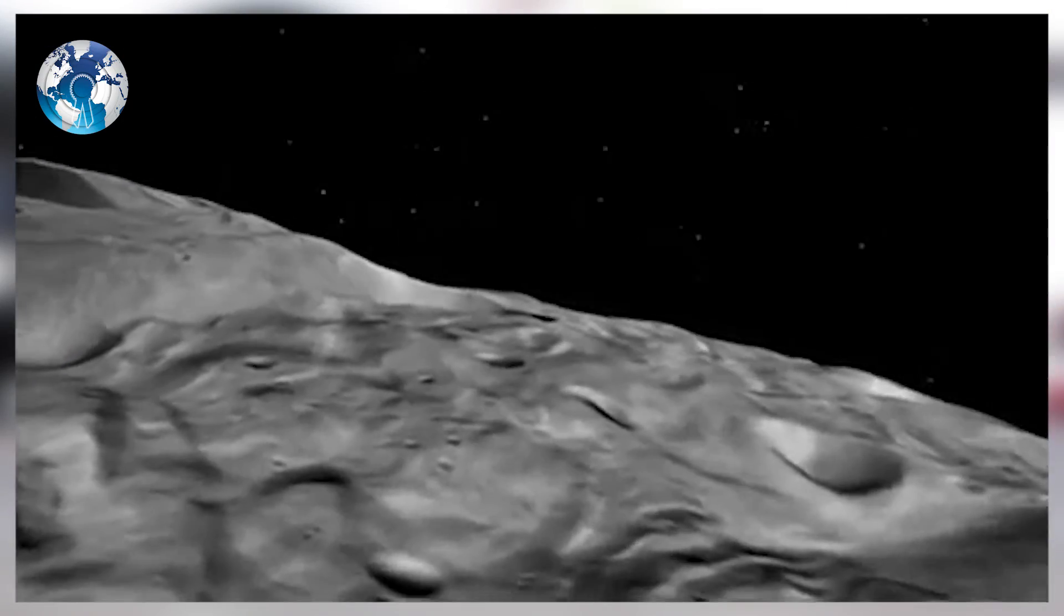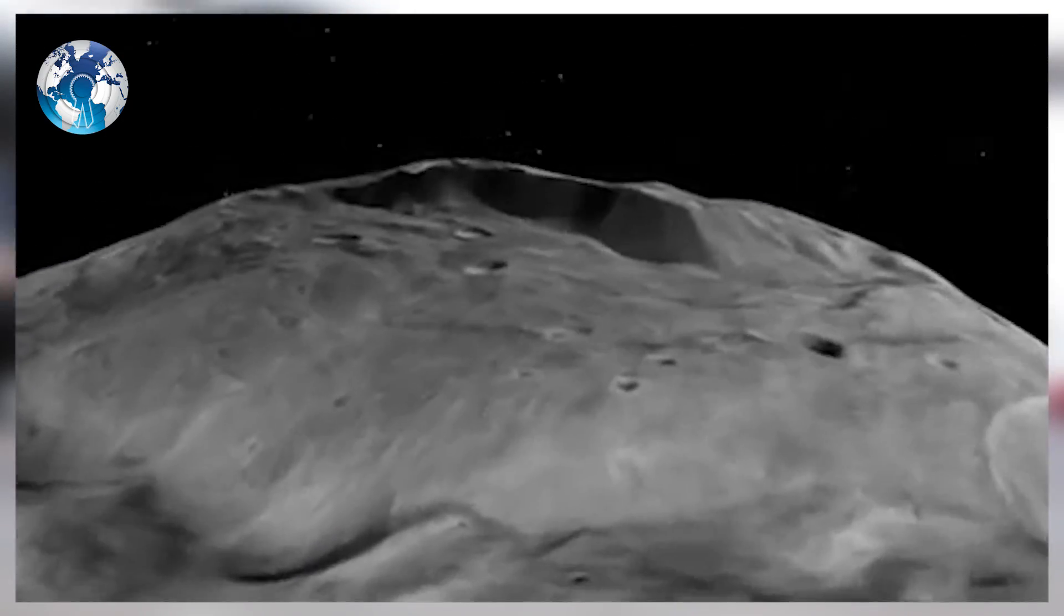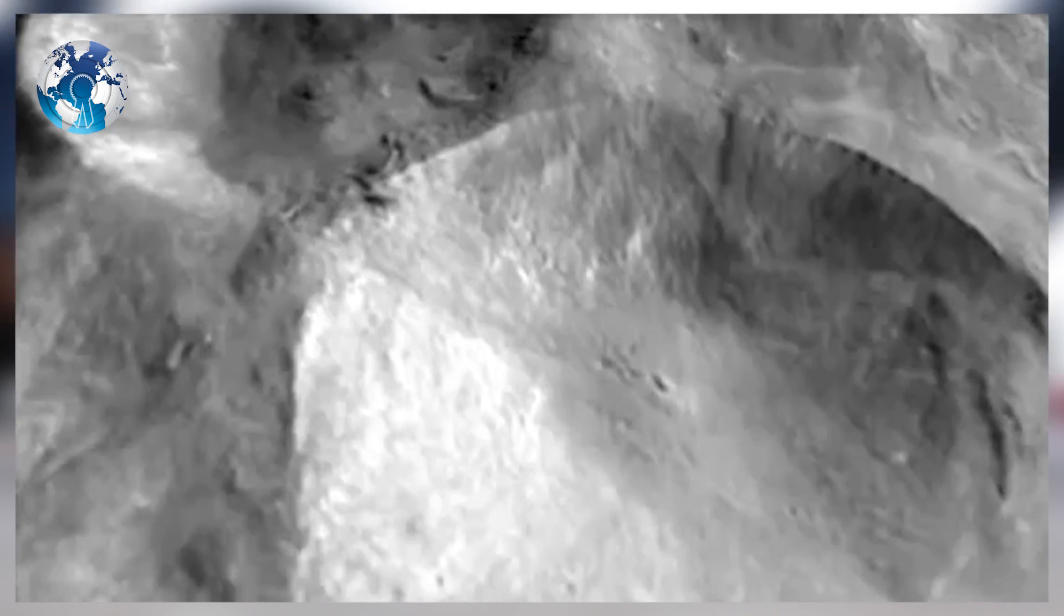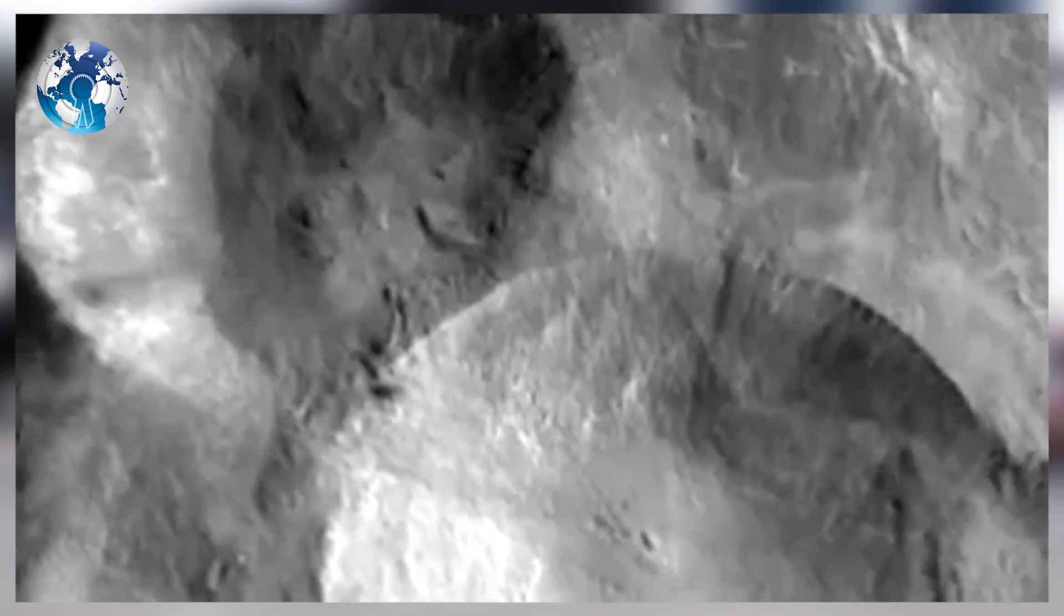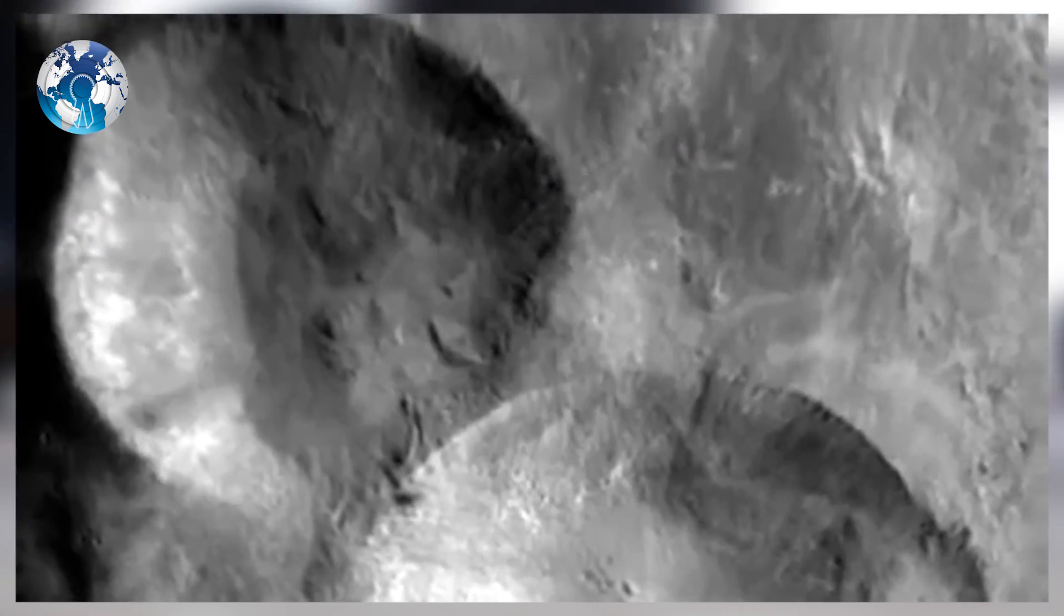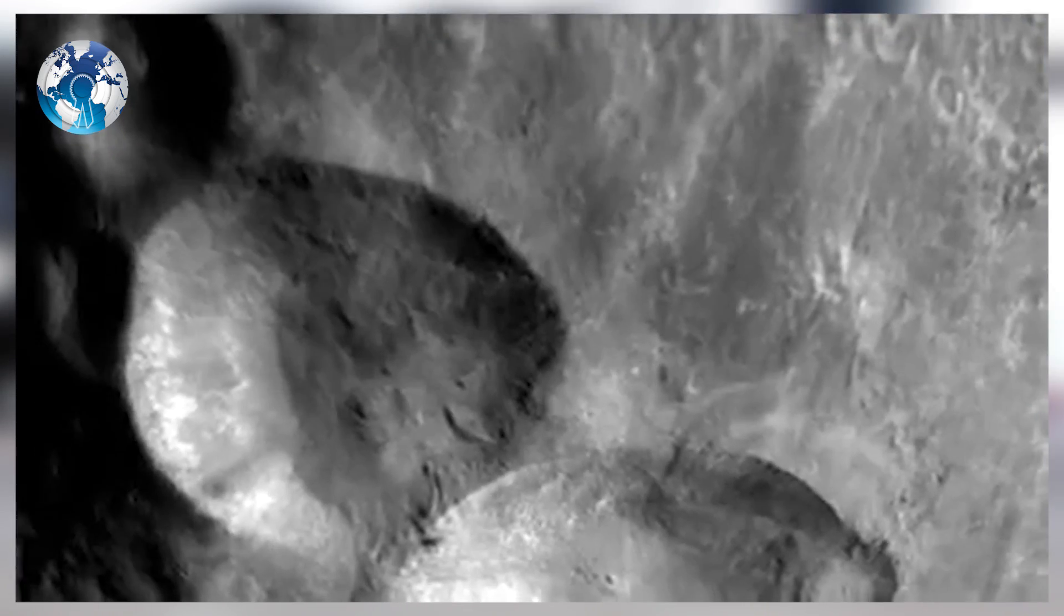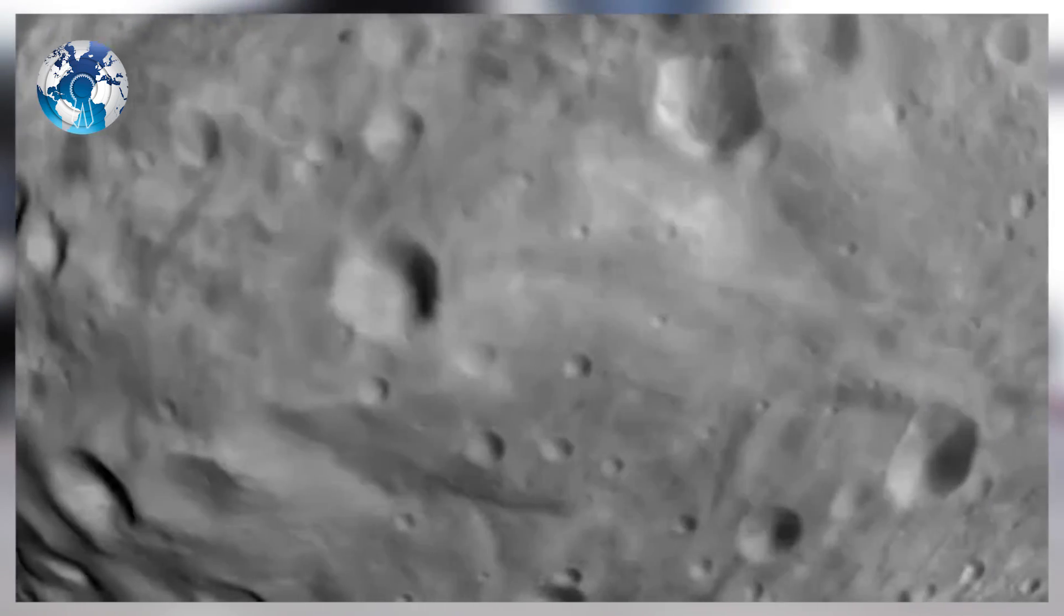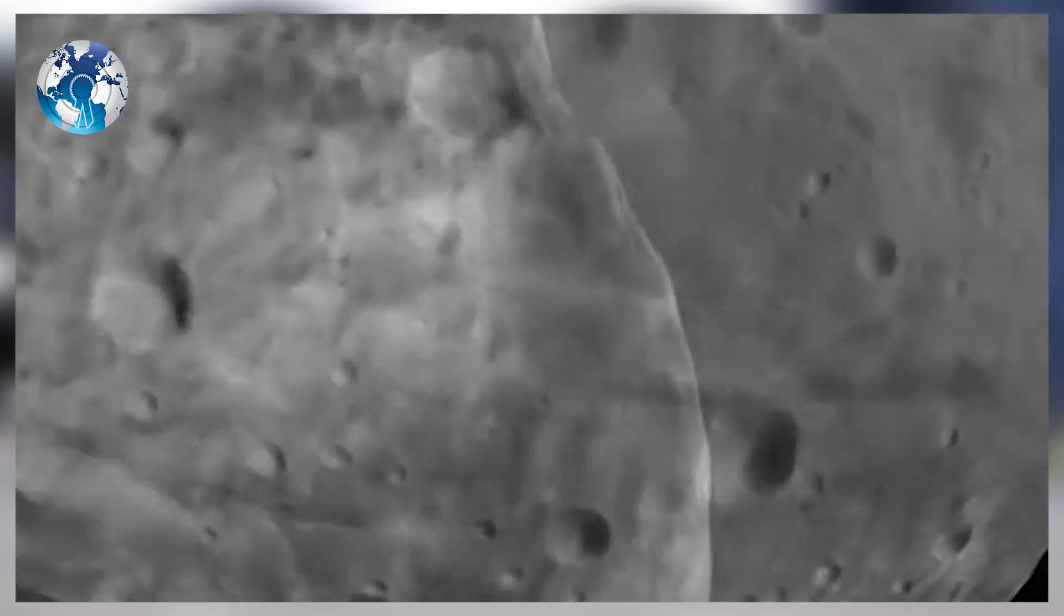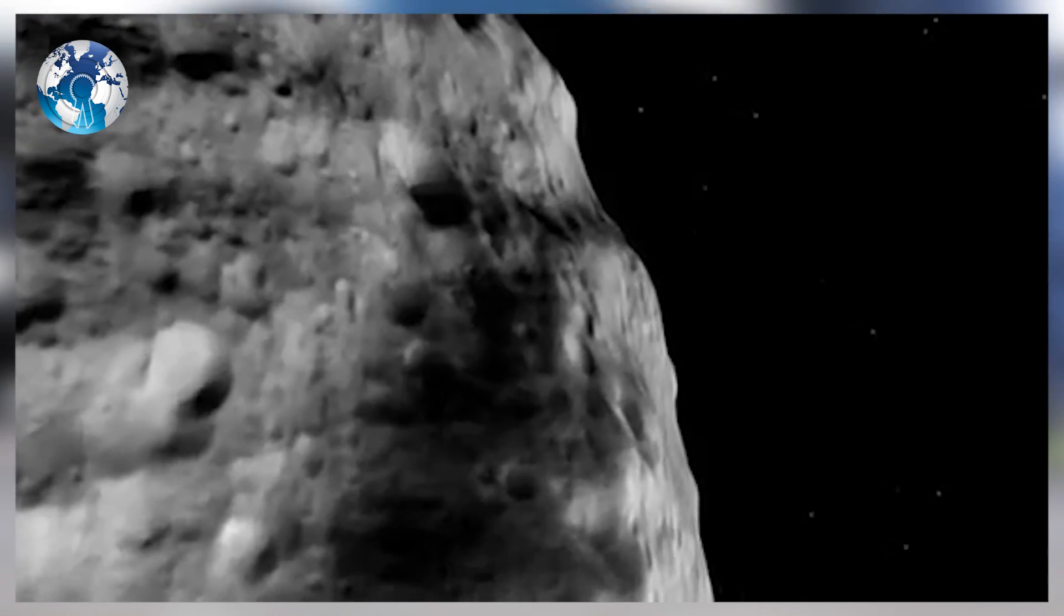Florence is the largest asteroid to pass by our planet this close since the NASA program to detect and track near-Earth asteroids began, Chodas said. The 2017 encounter is the closest by this asteroid since 1890 and the closest it will ever be until 2500.